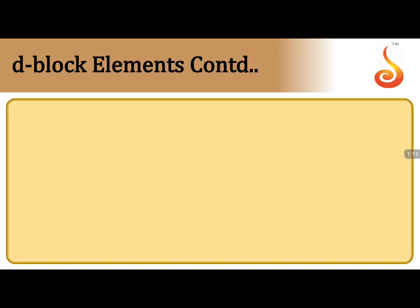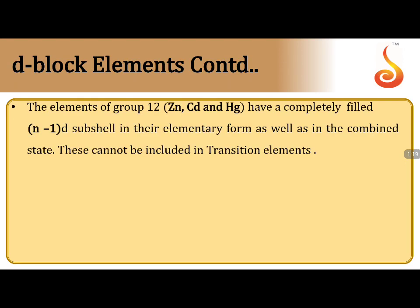In d-block elements, the incomplete subshells are (n-1)d subshells. The general electronic configuration is: (n-1)d¹⁻¹⁰ ns⁰⁻² . The elements of group 12 — zinc, cadmium, mercury — have completely filled (n-1)d subshells.